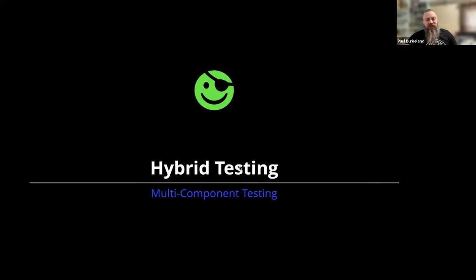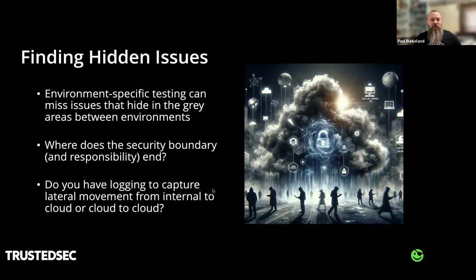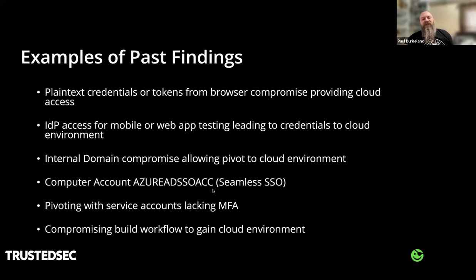This is why it's important to look at hybrid or multi-component testing. Attackers don't exist in a silo — they can move between your declared scopes during security tests. This can bring to light issues not apparent before: logging issues, security boundary gaps where there's no clear delineation of responsibility. Testing between two different environments can help figure out where you have blind spots, or where you need protocols for handling things and assigning responsibility. In the past, we've found good findings by combining testing.